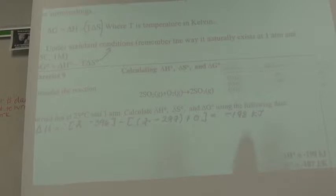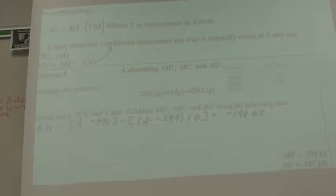So delta H in this case is negative 198 kilojoules per mole. Now, if you had to look at this on its own, what kind of reaction is this? Exothermic. Exothermic is generally spontaneous in the forward direction.